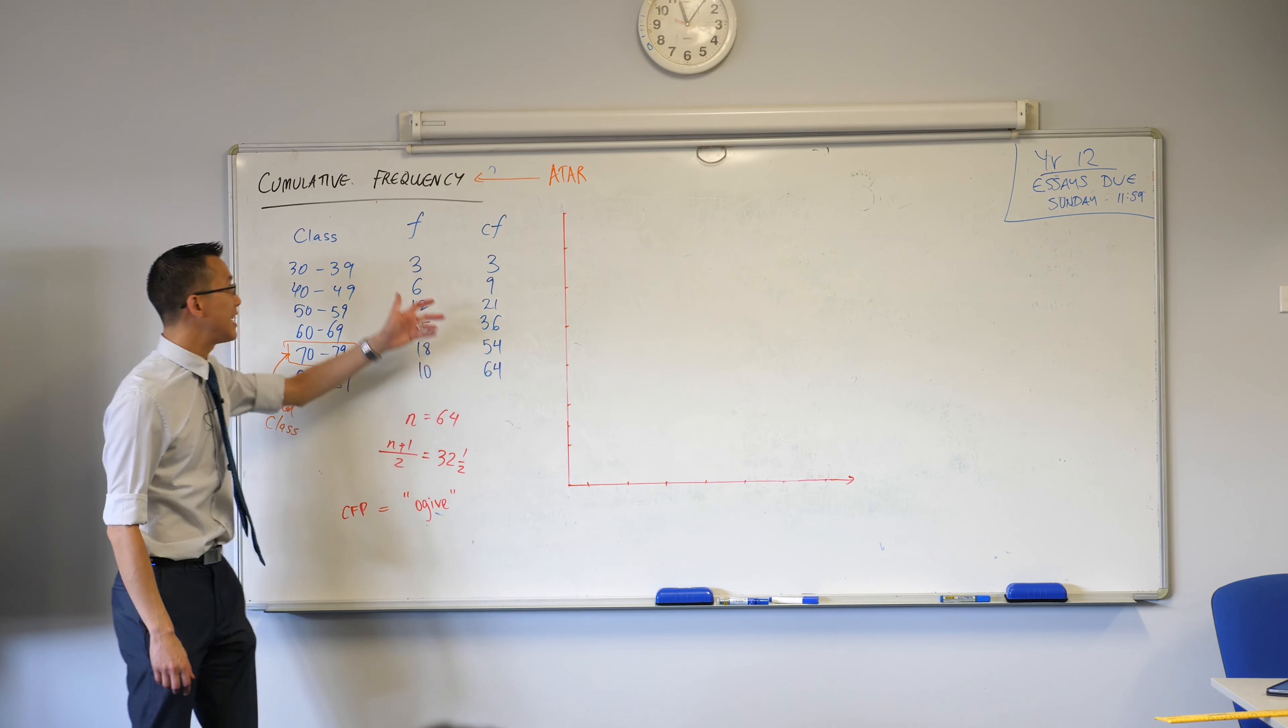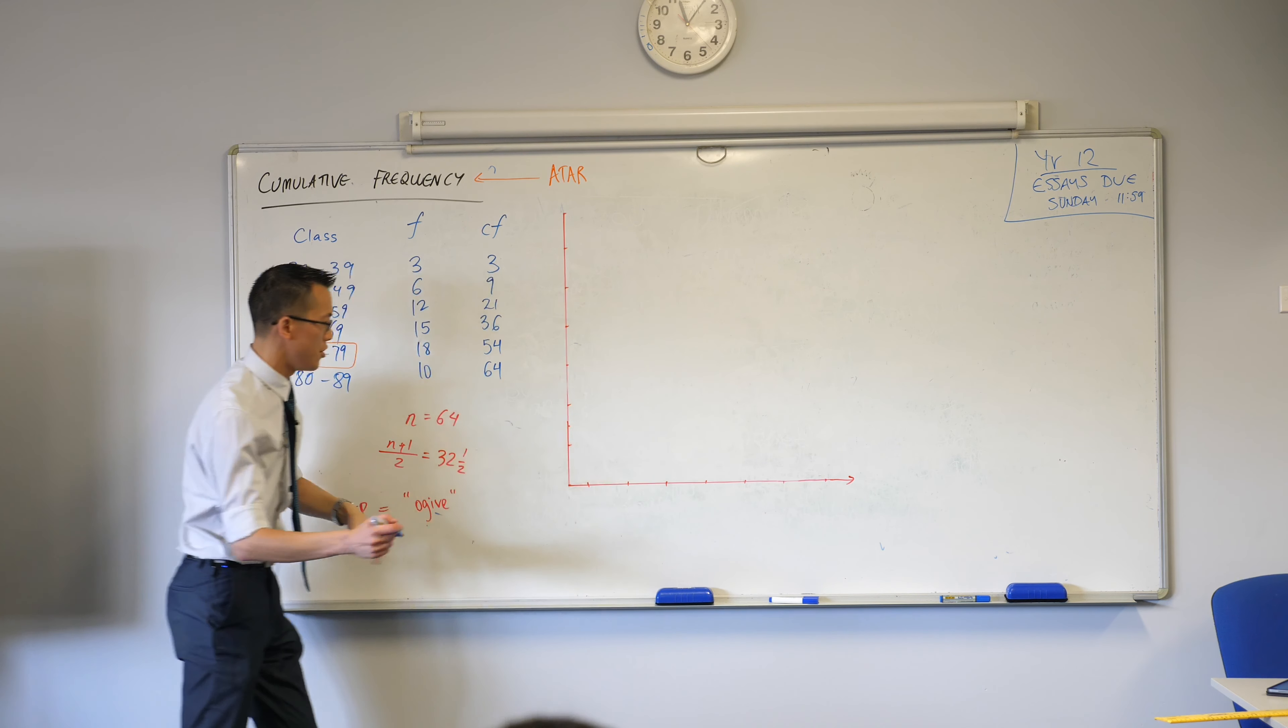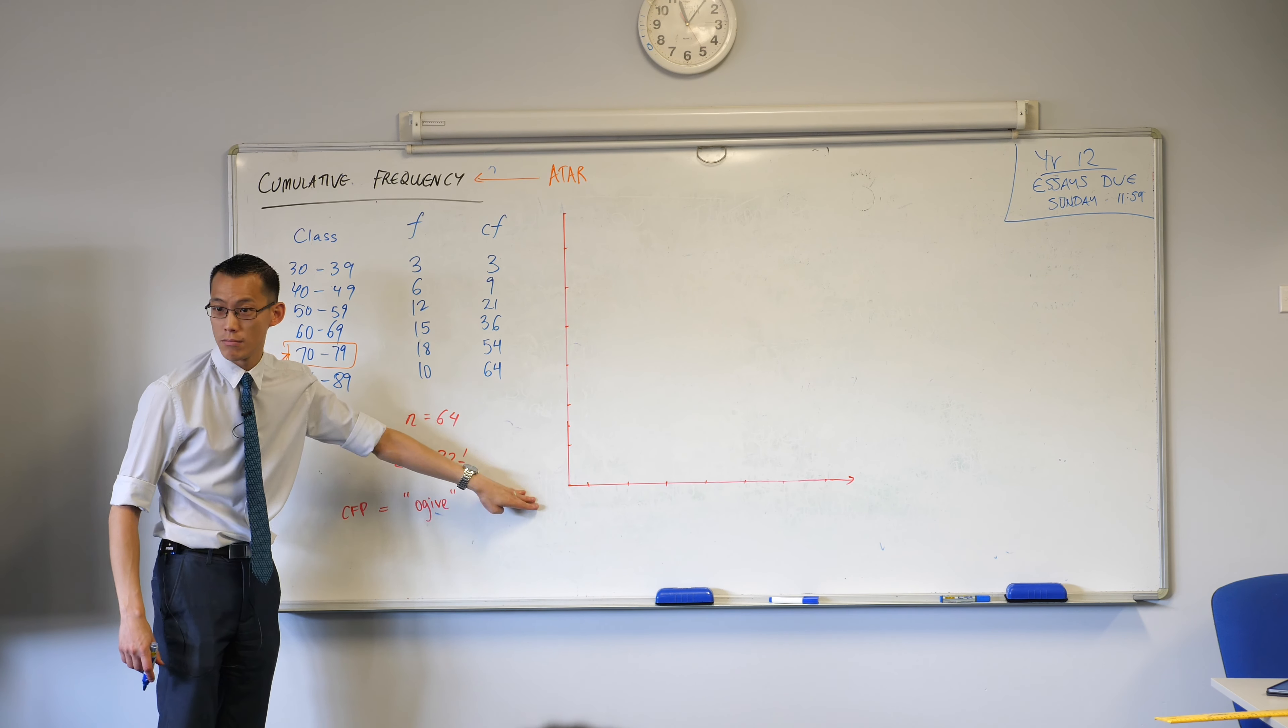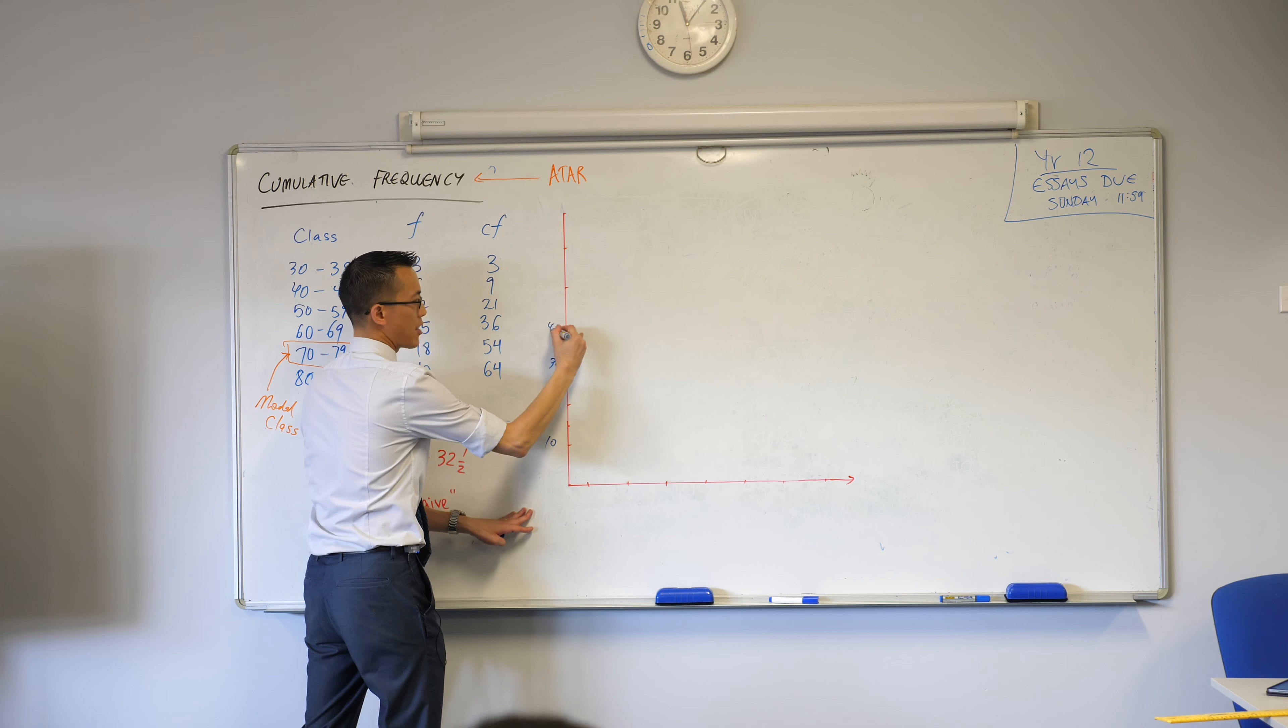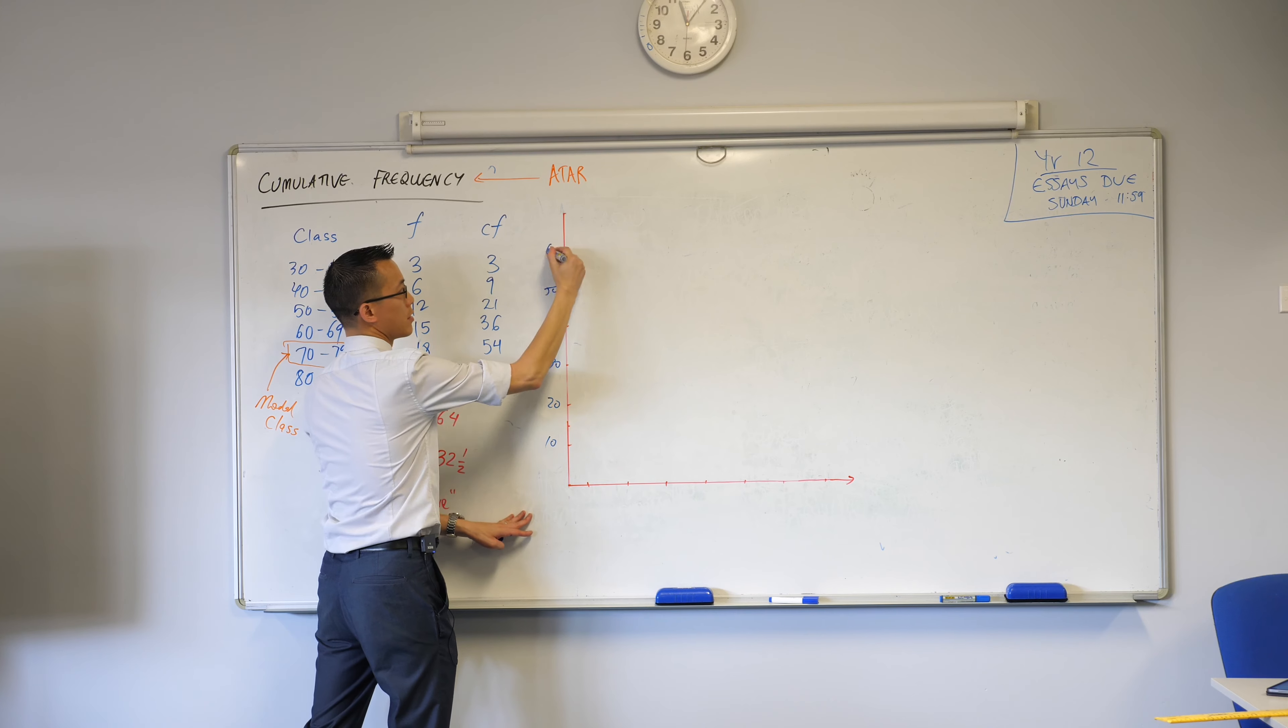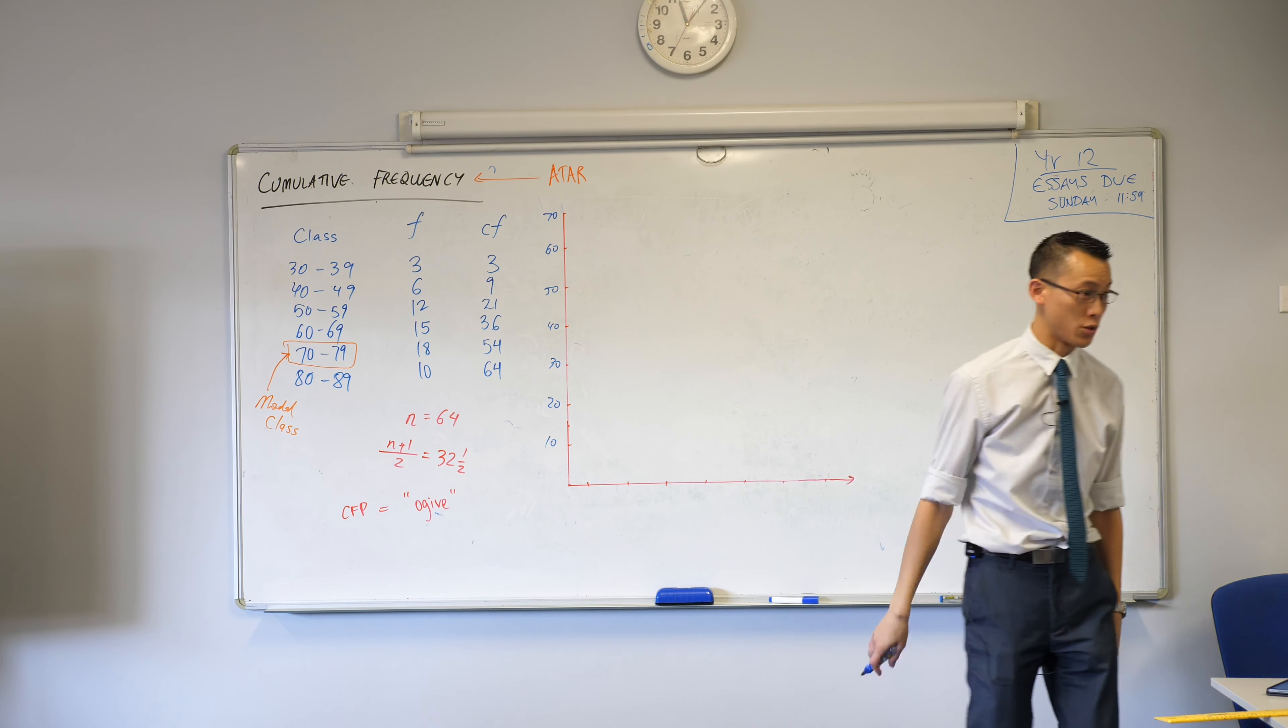I've got a vertical scale which is going to give me cumulative frequency, so I'm going to put the numbers on there right now. You can see I said I was going to start from zero, and then I'm going to count up all the way so I can make sure I at least get to 64. So I've topped out at 70 just so that I can keep numbers round.